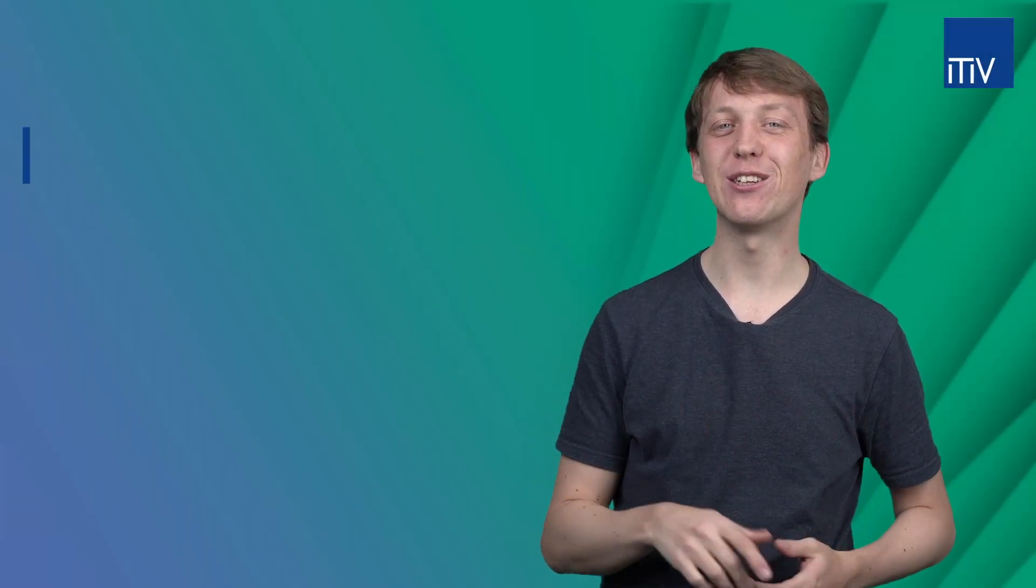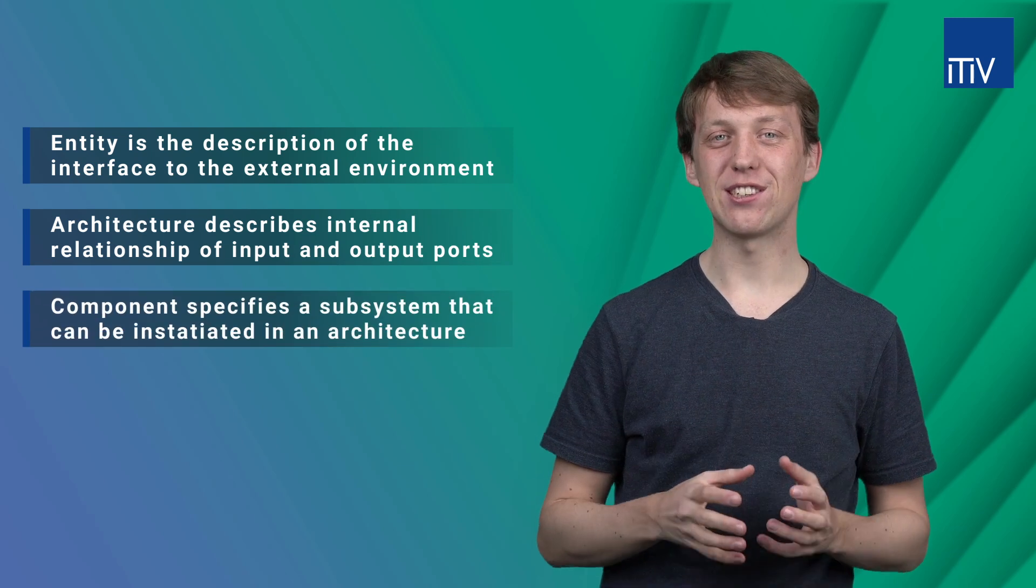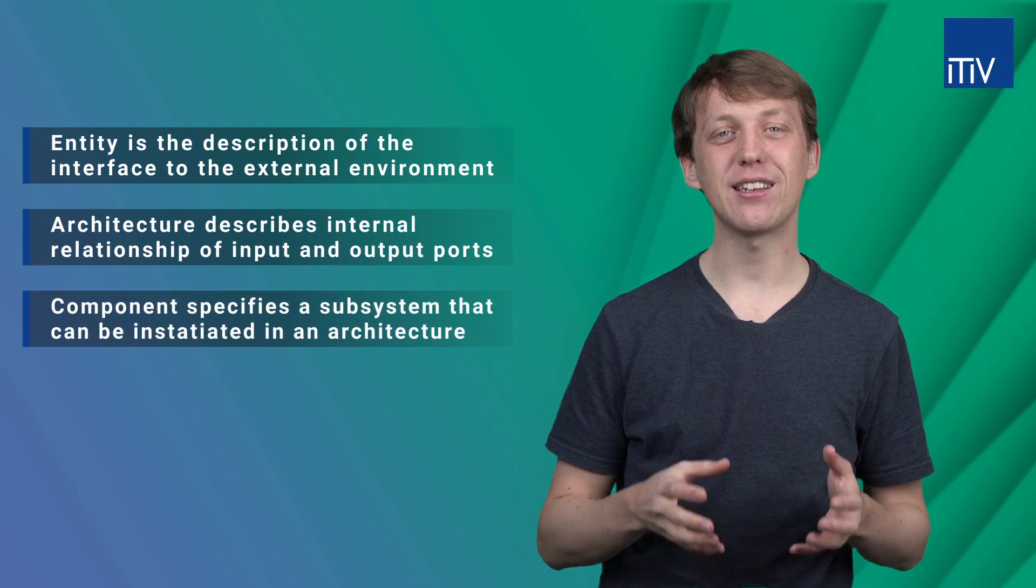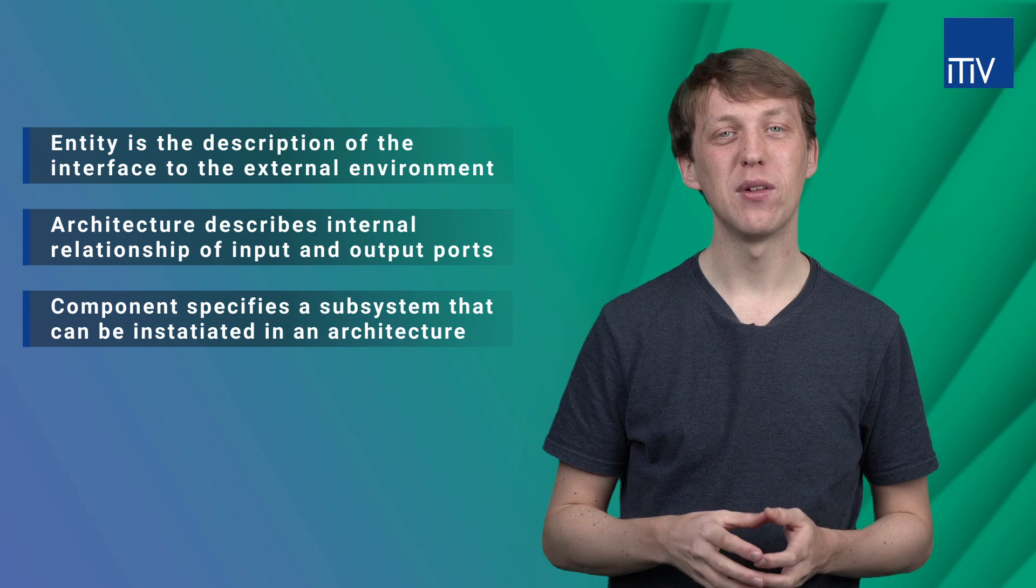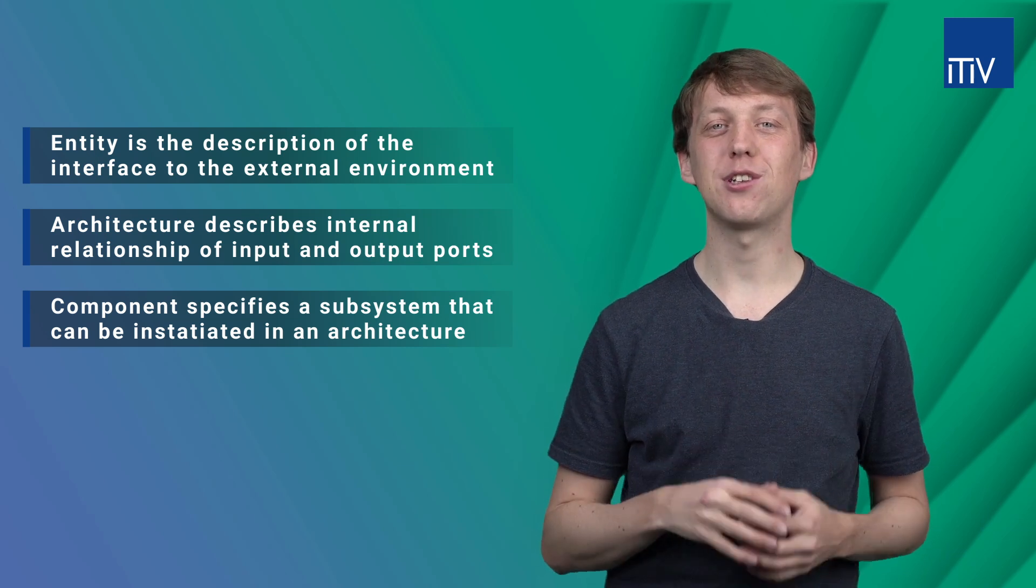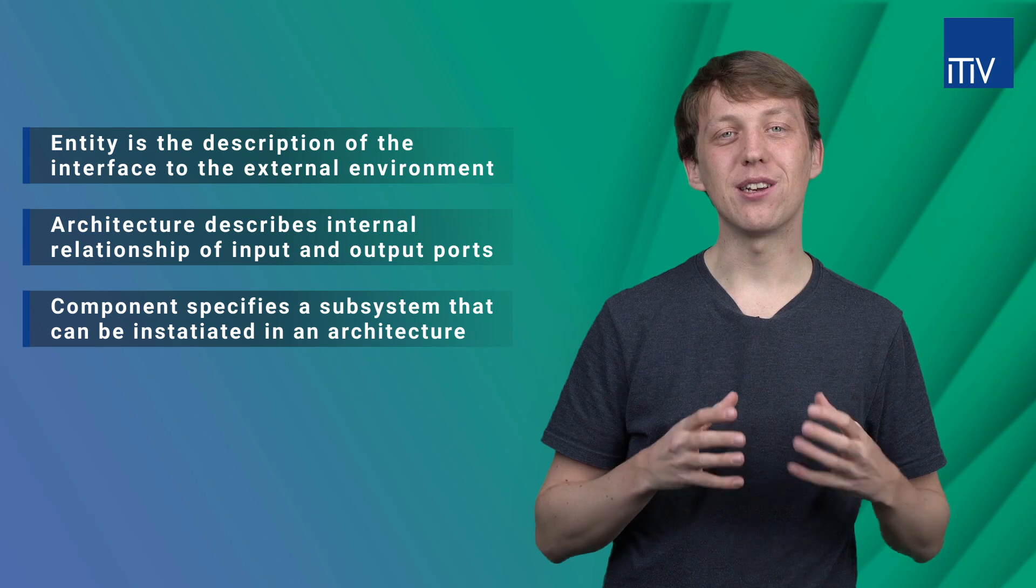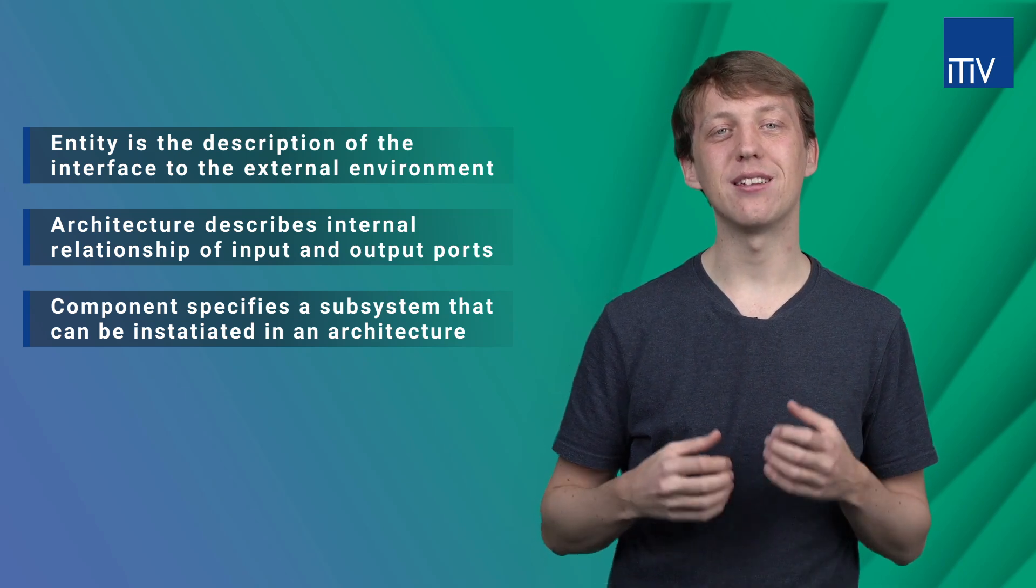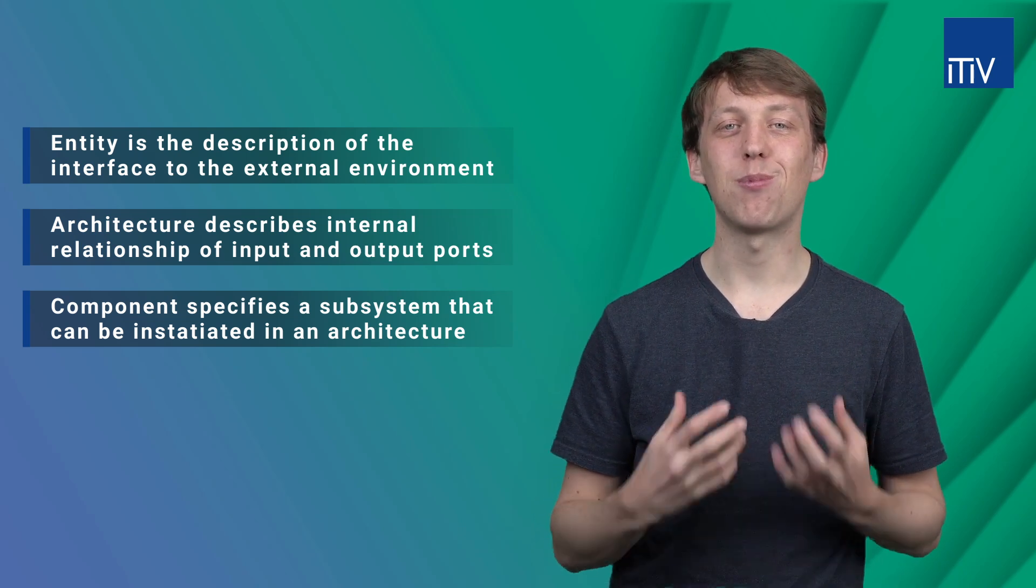Alright, let's do a short recap on what I've shown you in this video. We first designed an AND gate by defining the interfaces of the design before writing a behavioral description of it. Finally, we instantiated the AND gate within another design and connected the ports.